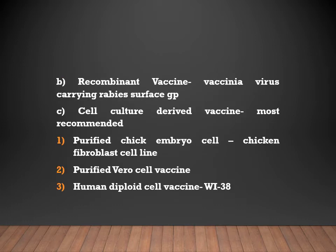Recombinant vaccines use vaccinia virus as a vector to carry the rabies surface glycoprotein. Cell culture-derived vaccines use cell lines: the purified chick embryo cell vaccine uses a chicken fibroblast cell line; the purified Vero cell vaccine uses a continuous cell line; and the human diploid cell vaccine uses human cells. The human diploid cell vaccine is the most preferred method used today for rabies vaccine production.